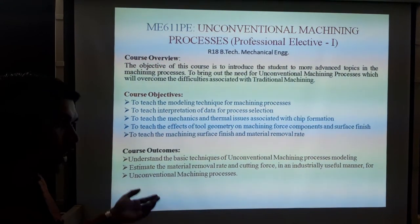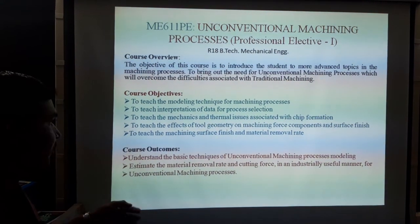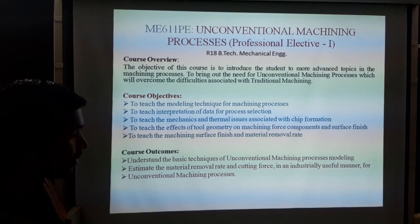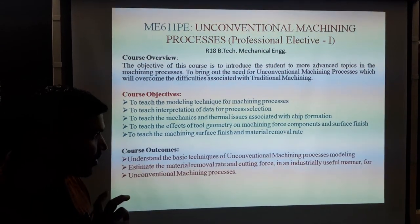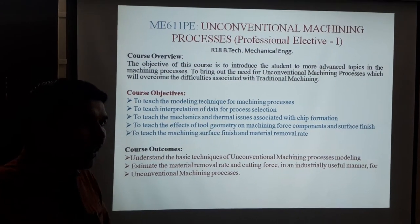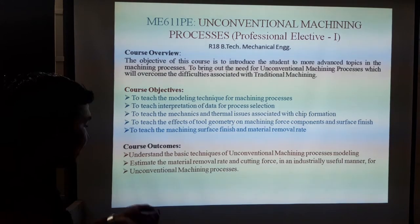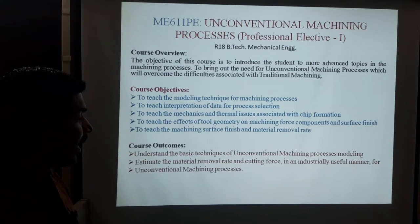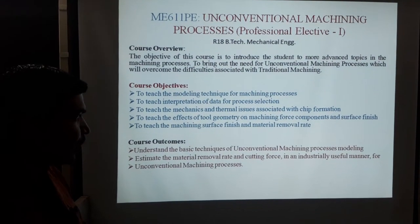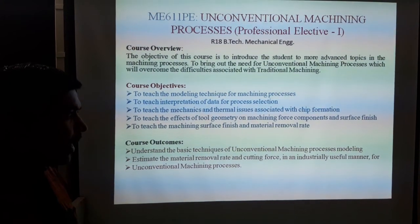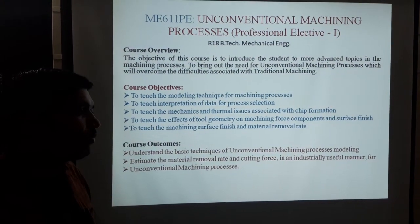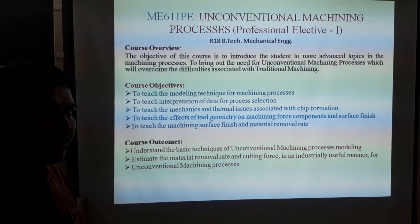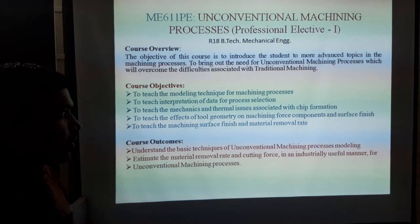Then coming to course outcomes - there are 3 points. First: understand basic techniques and use of unconventional machining process and modeling. Second: estimate material removal rate and cutting forces. Third: apply unconventional machining processing in an industrial and useful manner. These are the course outcomes.